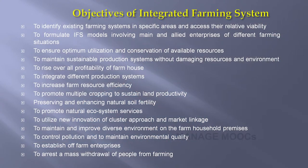Another objective is to maintain a sustainable production system without damaging resources and the environment. Through integrated farming system we can achieve overall profitability of a farm household, utilize resources at their optimum level, and promote multiple cropping to sustain land productivity. One of the major objectives is also to promote natural ecosystem services.